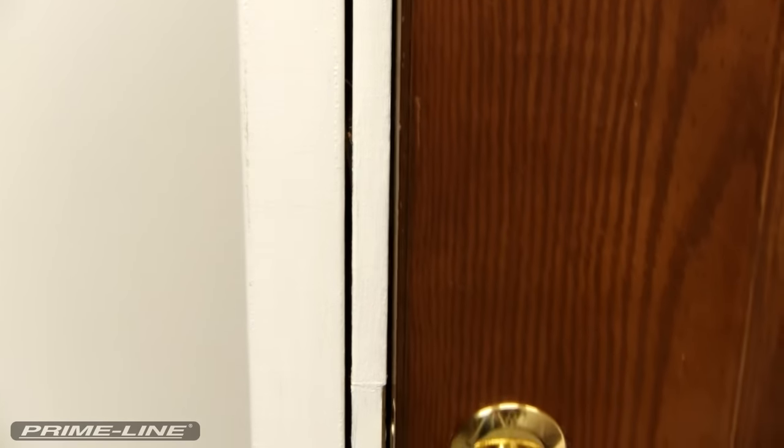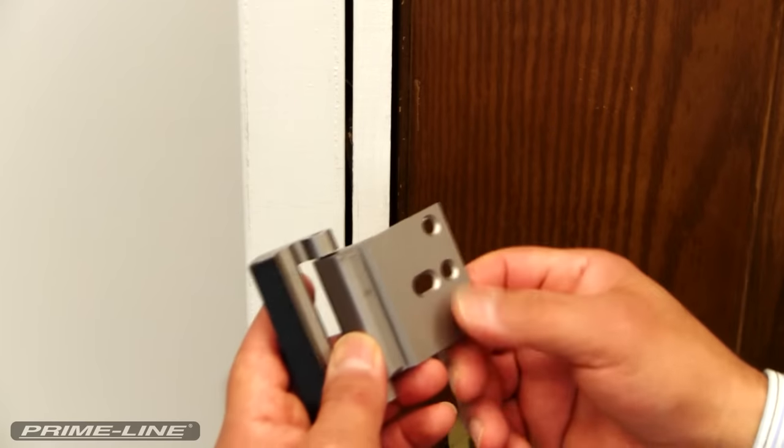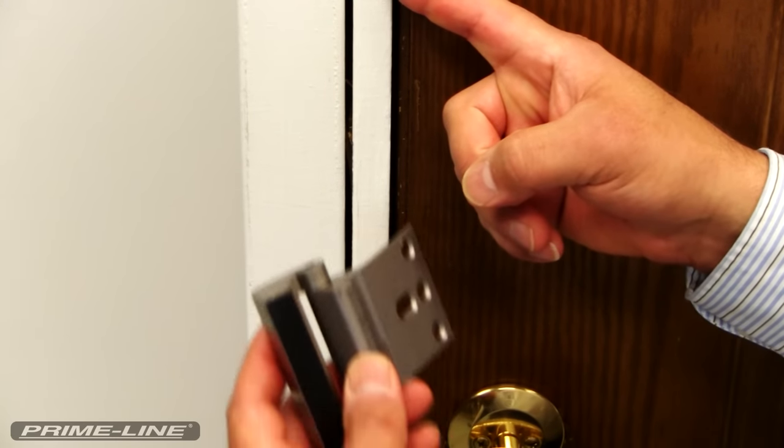So once you've determined where the lock will be installed, you'll want to close the door so we can test fit the mounting plate and establish whether we'll have to mortise out the door jamb or not.